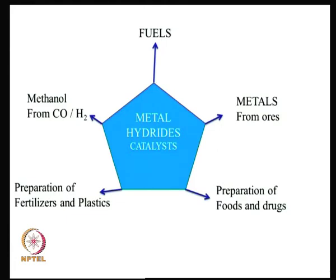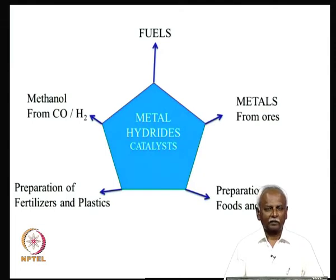If we look at the industrial chemistry that is going on, much of it is oriented towards fuels. Metal hydrides and catalysts containing metal-hydrogen bonds are in fact a key component of the fuel industry. It is possible to make methanol from carbon monoxide and hydrogen, and this also requires the use of a metal catalyst that contains a metal-hydrogen bond. So metal hydrides are very important in the fuel industry.